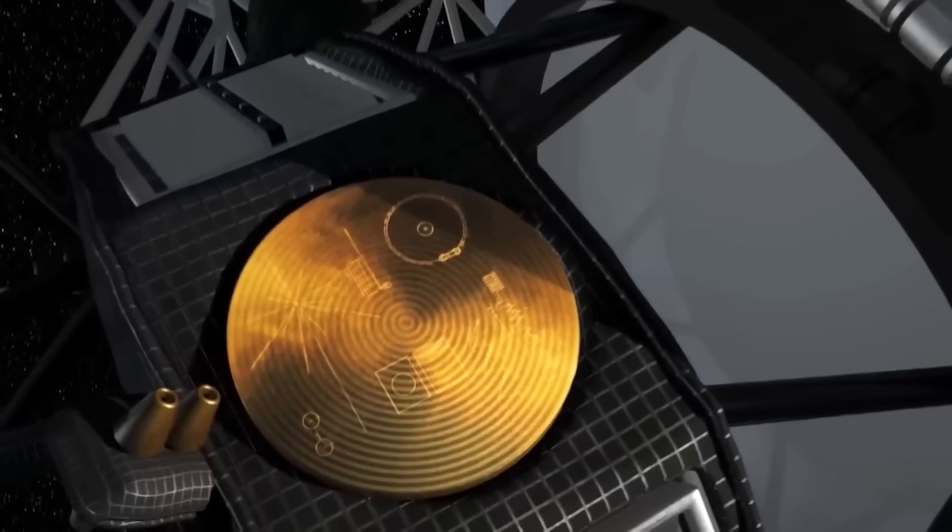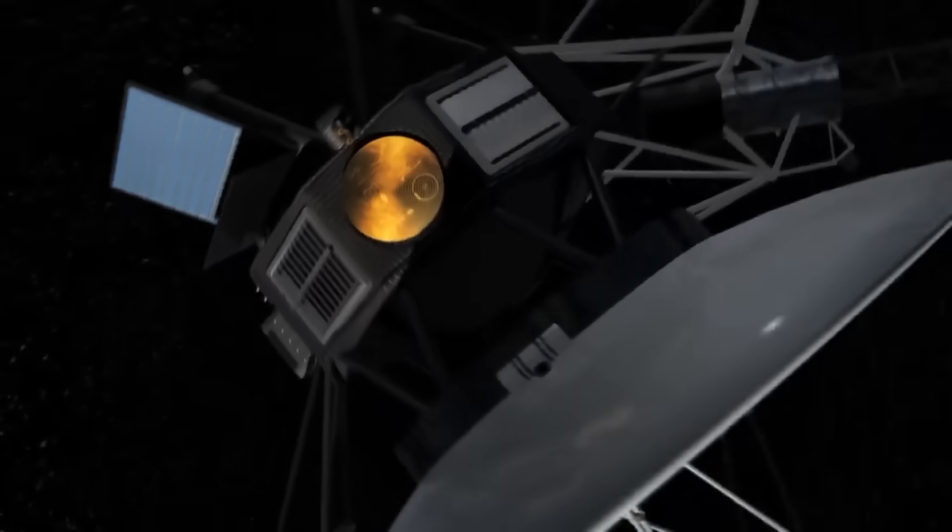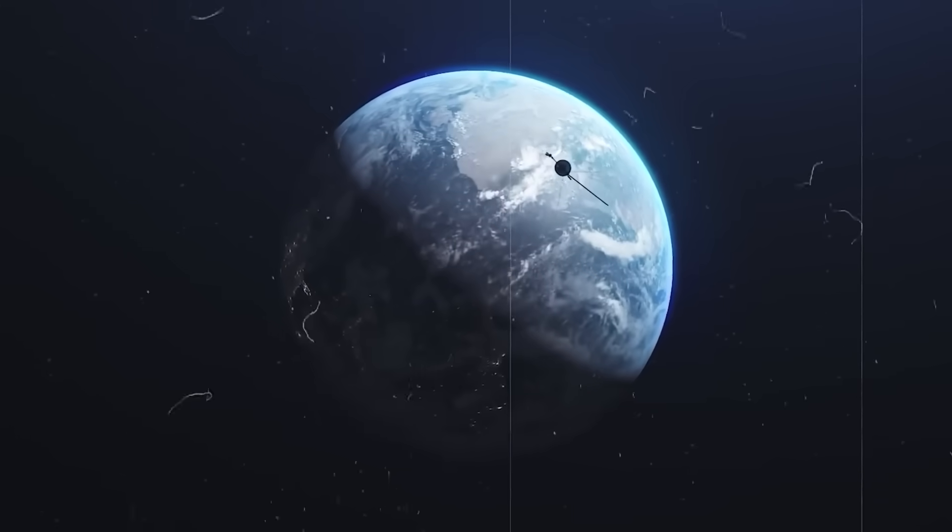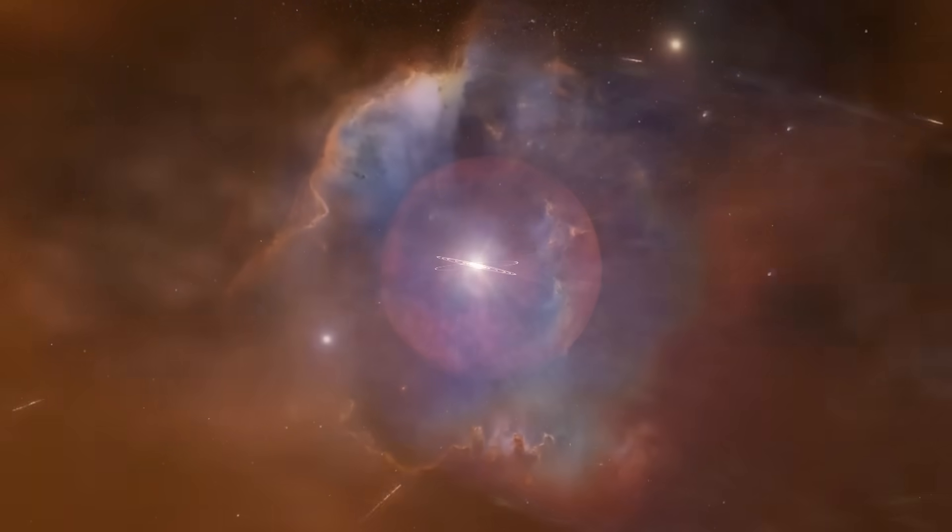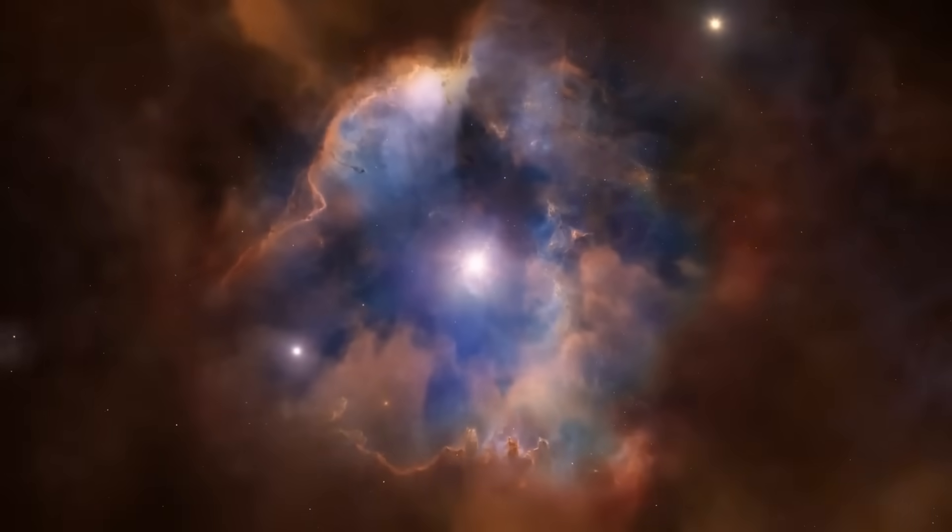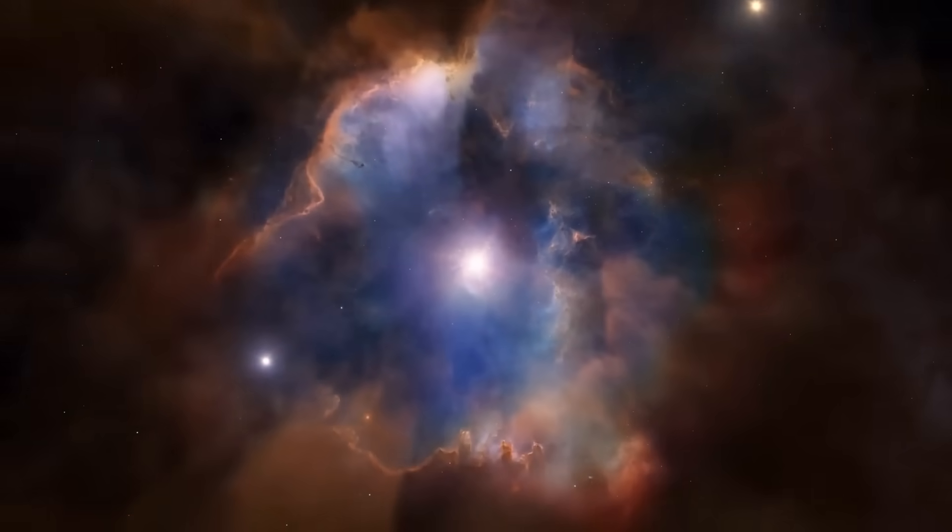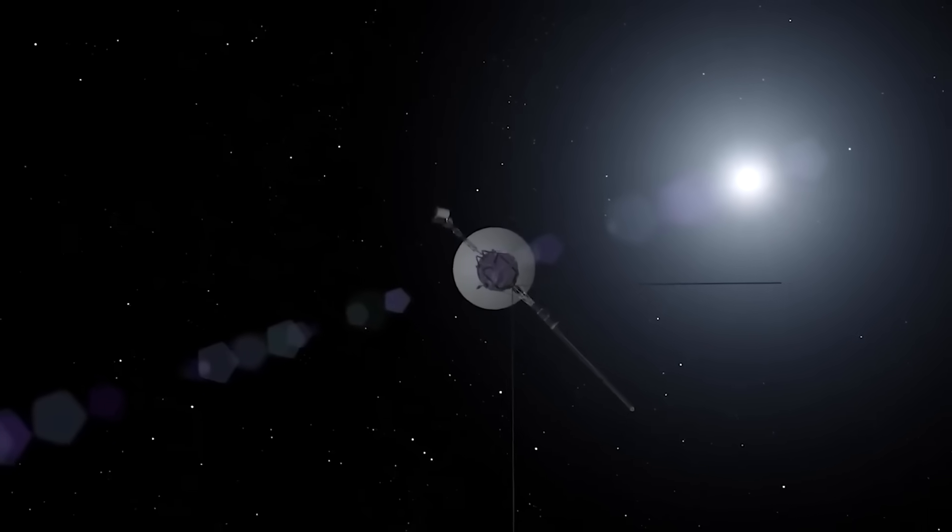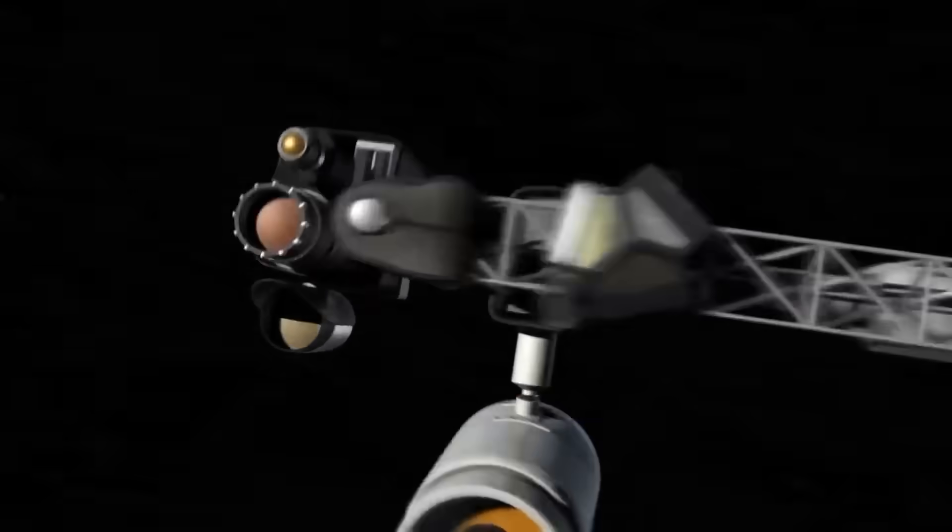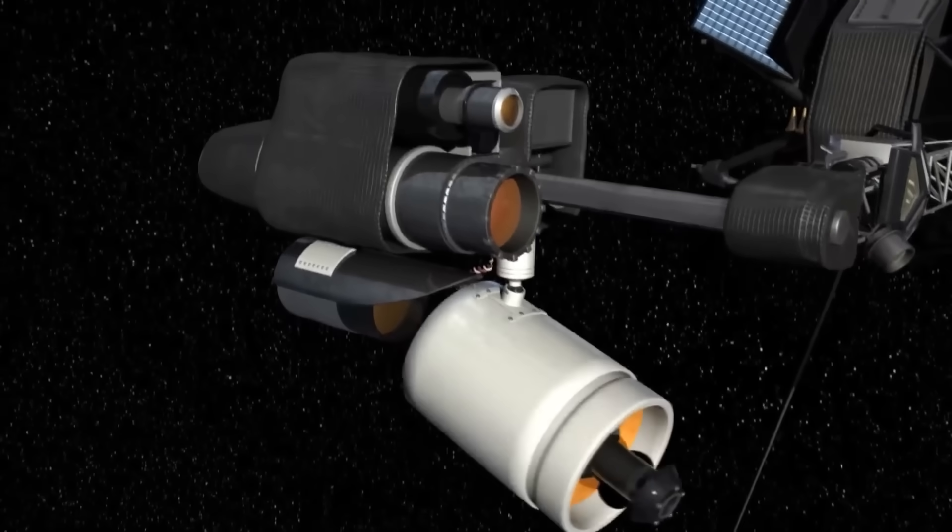Instead, Voyager 1 reported a field nearly identical to the one inside the solar system. The only major shift was in plasma density, which confirmed the boundary had been crossed. But how can the field remain unchanged while the environment is entirely different? Some proposed magnetic reconnection events or large-scale draping fields stretching from the sun, but none of those explanations held up under scrutiny.